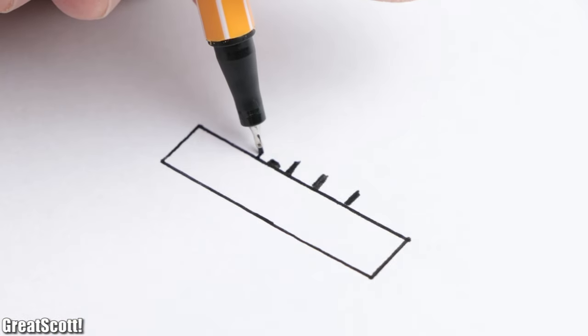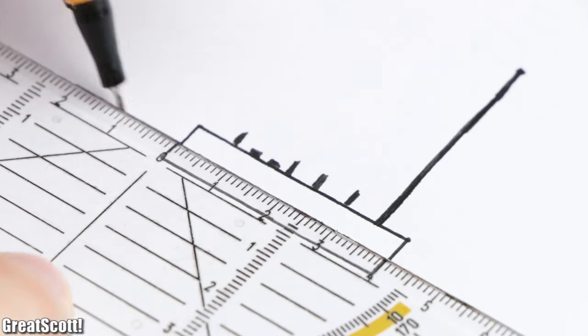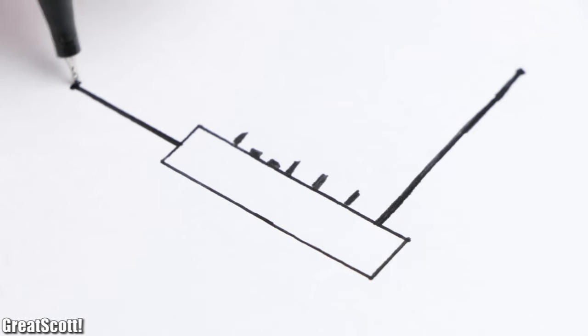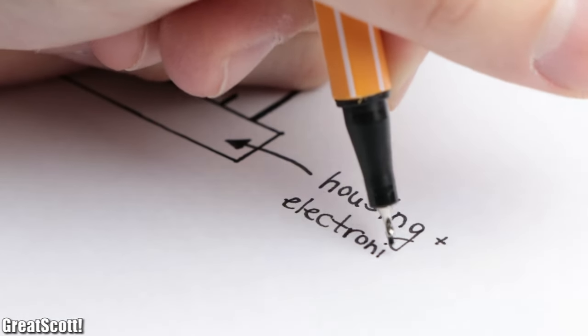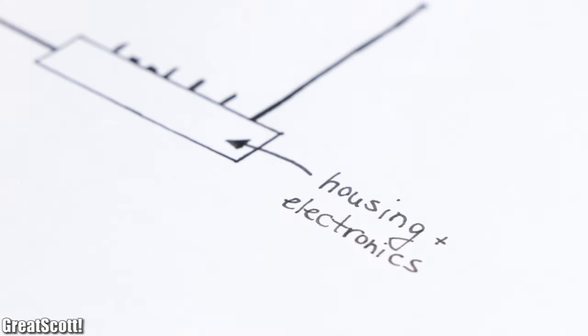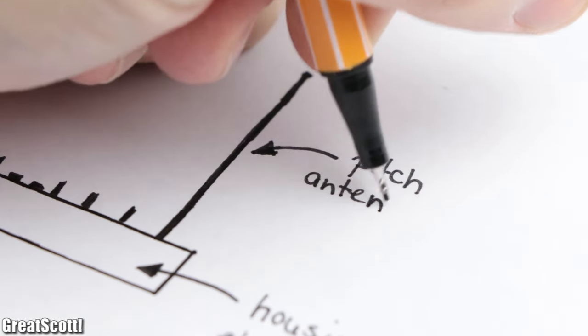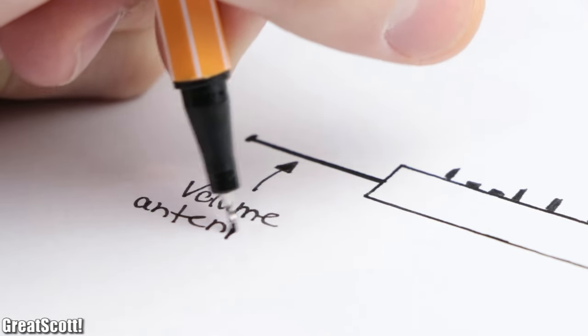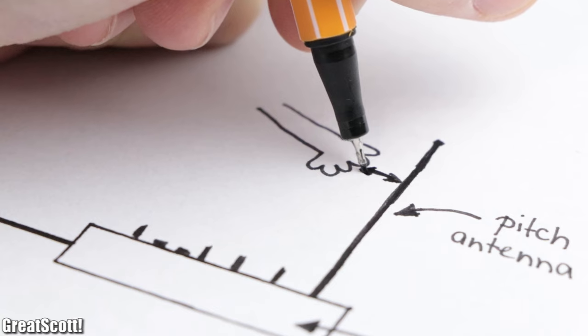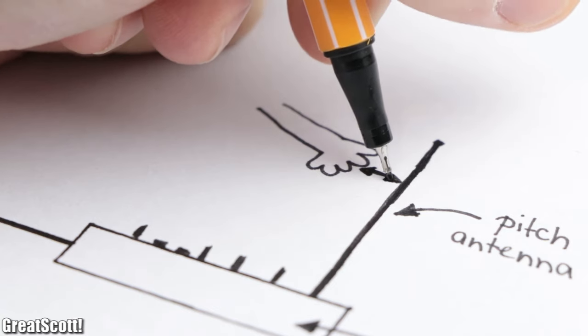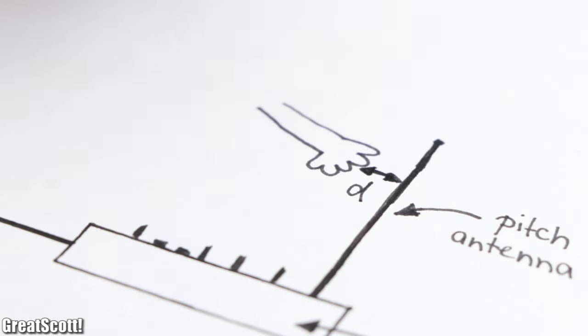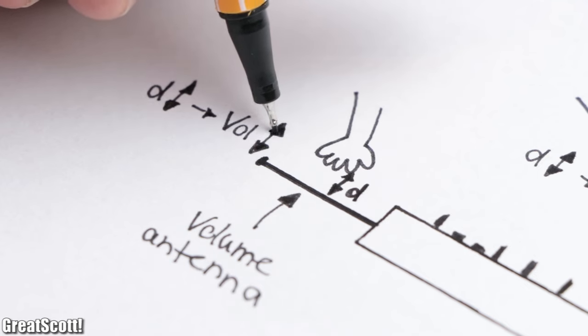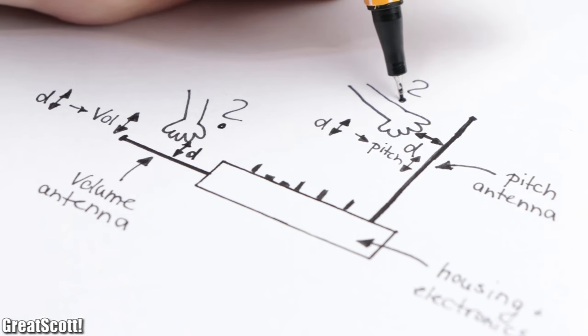When we look at modern theremins, they consist of three main components. We got the housing which contains all the electronic circuits, one vertical antenna which is utilized to control the pitch, and one horizontal antenna which is utilized to alter the volume. Both the pitch and volume are influenced by the distance of the player's hand to the corresponding antenna. But how can we achieve this electrically?